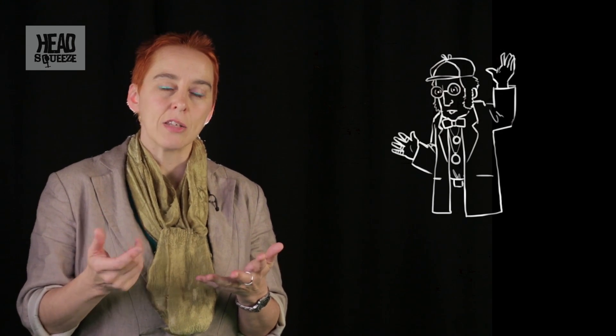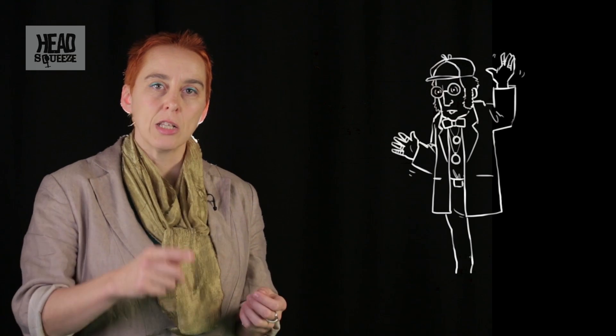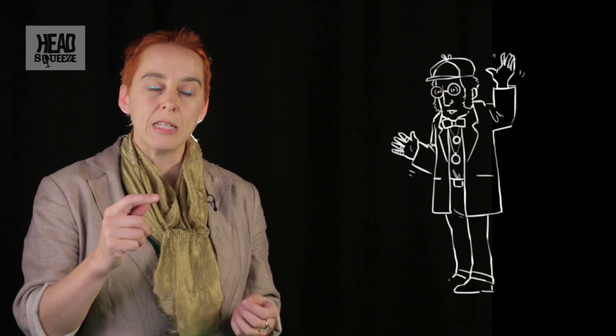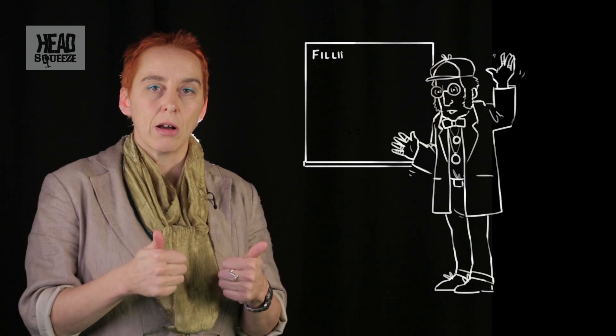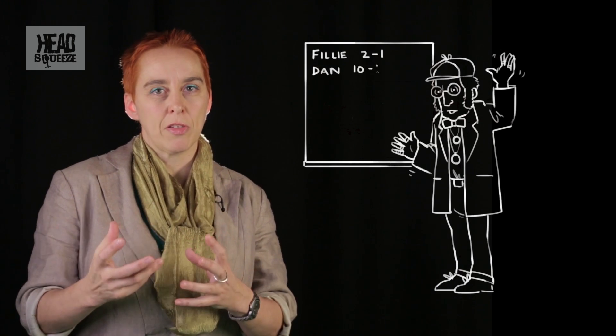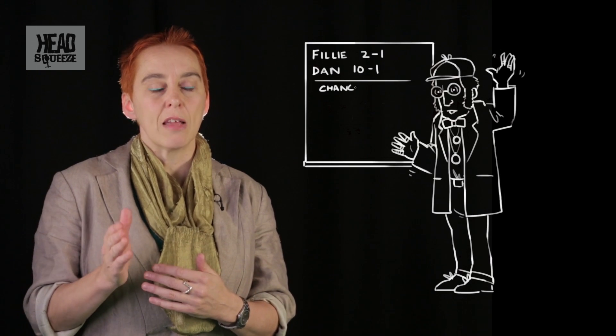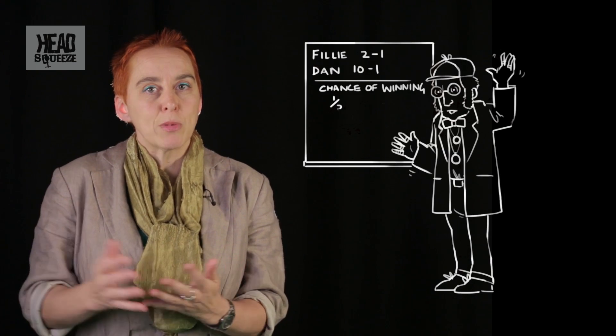In the second race Decimal Dan is running and again because he's 10 to 1 I'm going to assume he's got a 1 in 11 chance of winning. So my total chance of them winning the first two races between them and me still being in the accumulator is a third times an eleventh, so that's 1 in 33. I'll be pretty lucky if they both win, but let's be optimistic.